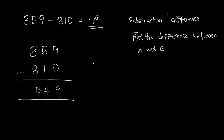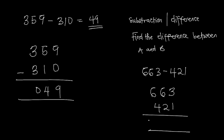Let's look at another example: 663 minus 421. Ones column: 3 minus 1 gives 2. Tens column: 6 minus 2 gives 4. Hundreds column: 6 minus 4 gives 2. The answer is 242.